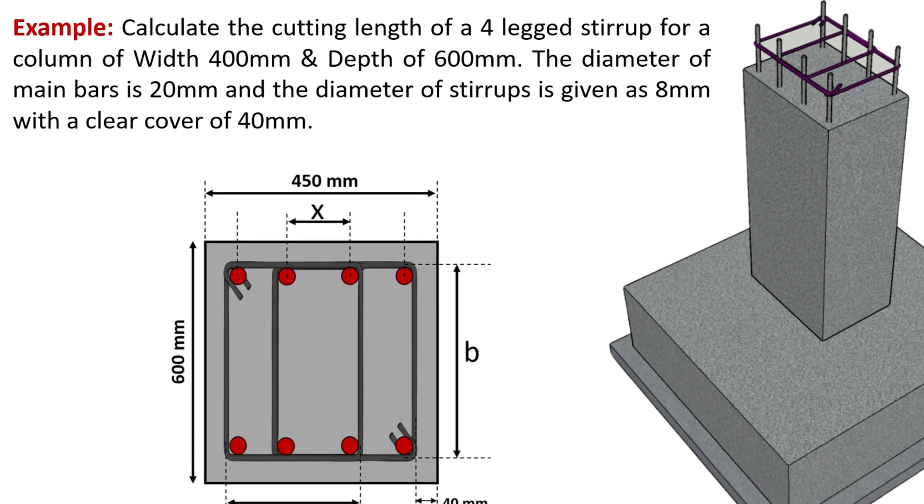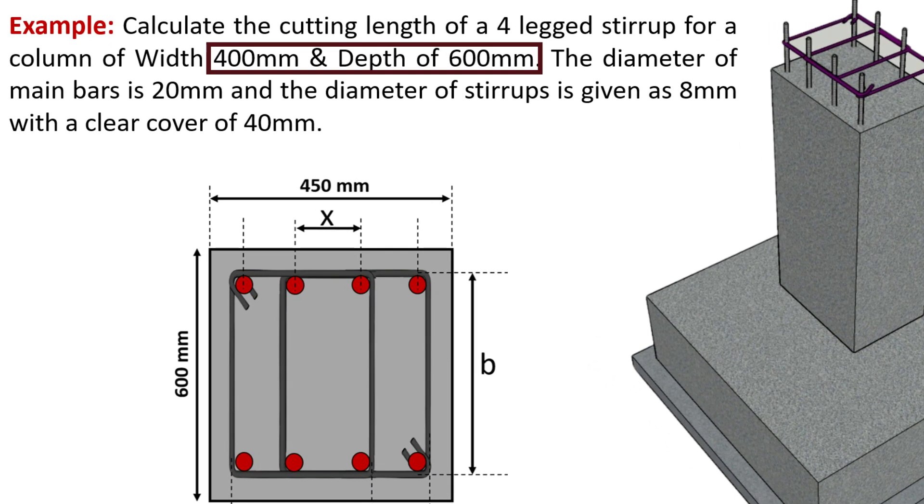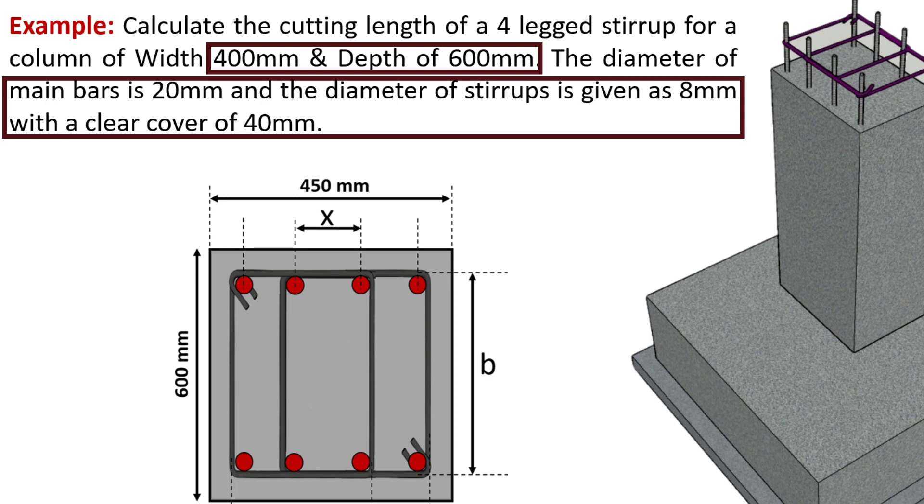We will be working with a column that has a width of 400 mm and a depth of 600 mm. The main bars have a diameter of 20 mm and the stirrups are 8 mm in diameter with a clear cover of 40 mm.